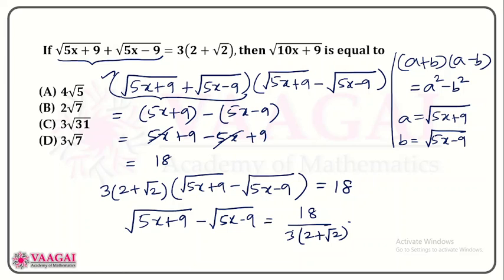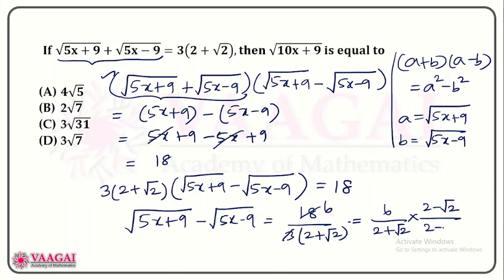Taking this term to the right hand side as division, we get 18 divided by 3 times of (2 plus root 2). Simplifying, 18 and 3 gives 6, so this becomes 6 divided by (2 plus root 2). We rationalize the denominator by multiplying by (2 minus root 2) over (2 minus root 2).